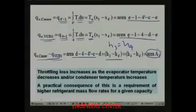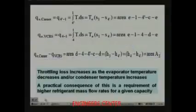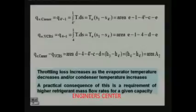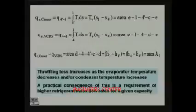From the T-S diagram, the throttling loss increases as the evaporator temperature decreases or the condenser temperature increases. A practical consequence of this is a requirement of higher refrigerant mass flow rate for a given capacity, because you are losing refrigeration effect. To get the same capacity, more refrigerant has to circulate — this is the consequence of changing the expansion process from isentropic to isenthalpic.